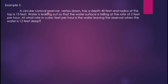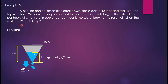Example five: a circular conical reservoir, vertex down, has a depth of 40 feet and a radius at the top of 15 feet. Water is leaking out so that the water surface is falling at the rate of 2 feet per hour. At what rate in cubic feet per hour is the water leaving the reservoir when the water is 12 feet deep? We illustrate the conical reservoir with height, radius 15, and dh over dt equals negative 2 feet per hour since the water level is decreasing.